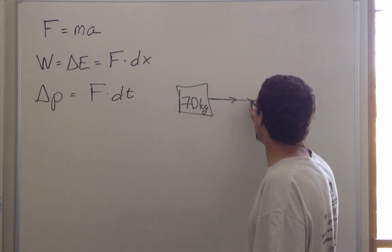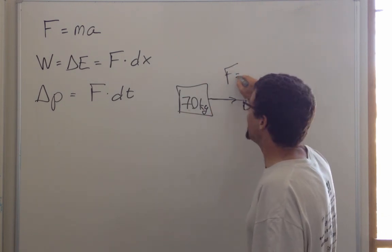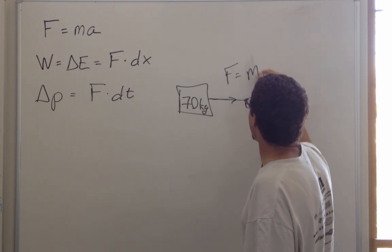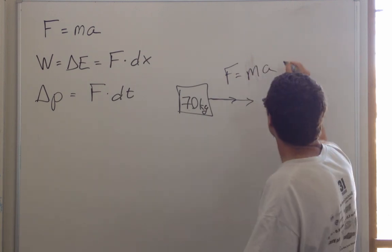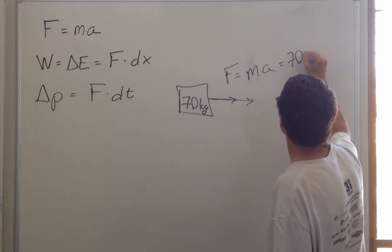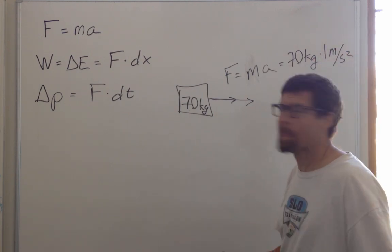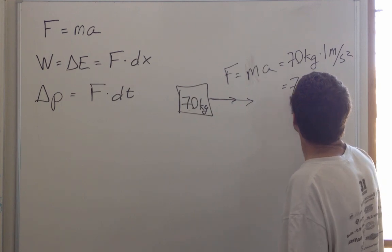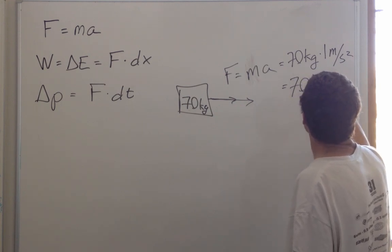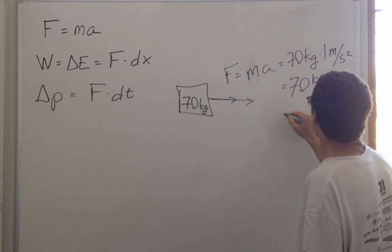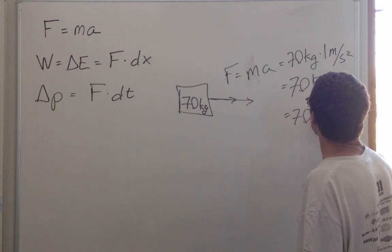And you'd be looking for the rope on me that would have a force equal to my mass times my acceleration. Well, what's that? That's 70 kilograms times one meter per second squared, or 70 kilogram meters per second squared, or 70 newtons.